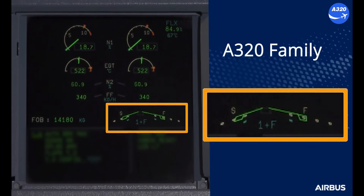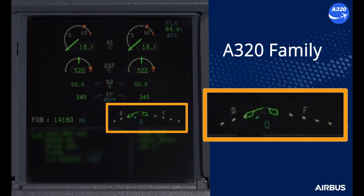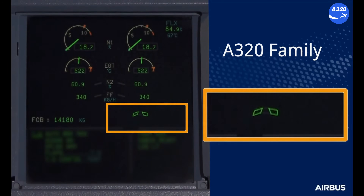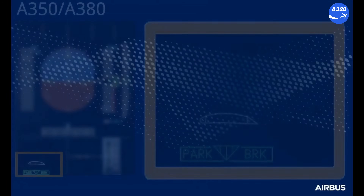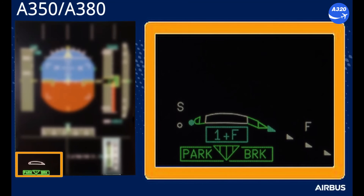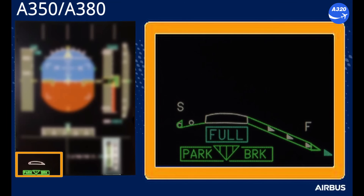Green boxes are displayed to indicate the real flaps and slats position. The selected position is identified in blue when the surfaces are in transit and disappears when the selected position is reached. They become amber when there is a slats or flaps fault. The display is similar on the A330 and A340 family. On the A350 or A380, the display is slightly different based on the inner and outer flaps or the number of angular positions, but the philosophy is the same.